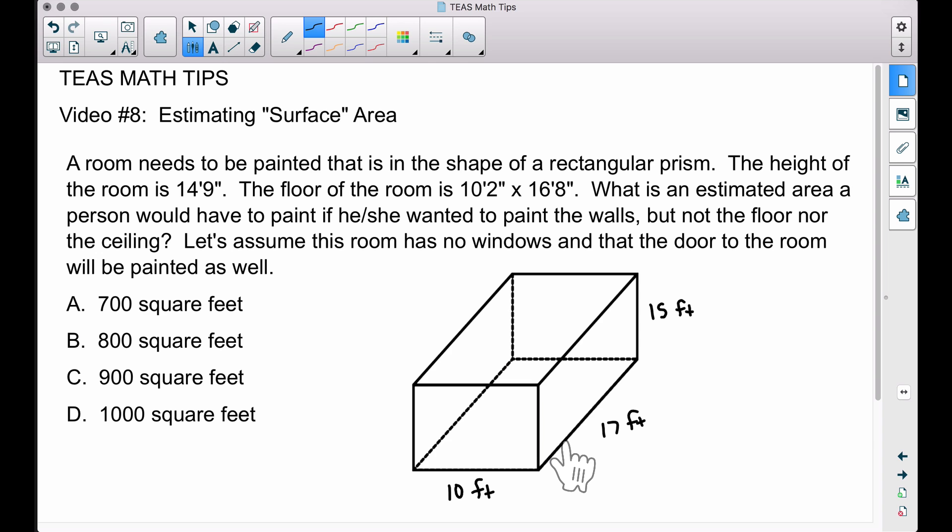Since we want to find the estimated area of the walls but not the floor or ceiling, we have this rectangle. The area of a rectangle is length times width, so let's take 17 times 15. 17 feet times 15 feet is 255 square feet. That's the area of one wall, but since we have a rectangular prism, this wall has the same area as the opposite wall. We want to double it, so multiply by two, giving us 510 square feet.